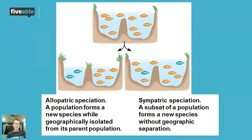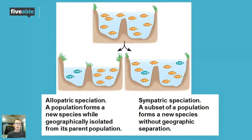Those two words are allopatric and sympatric speciation. So allopatric means away — these two groups of populations are going to be separated. A population forms a new species while they're geographically isolated from a parent population. On the left-hand side you see this fish pond that has some sort of barrier in between it.